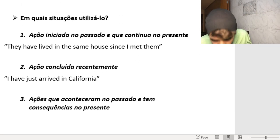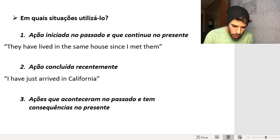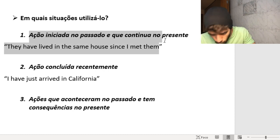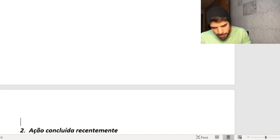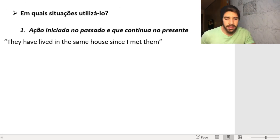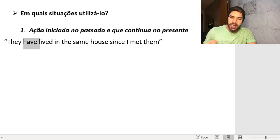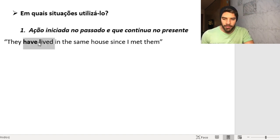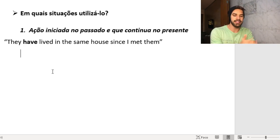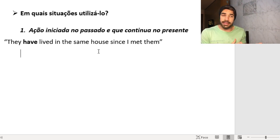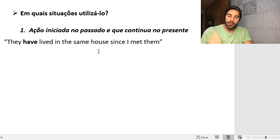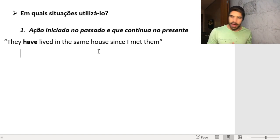So, when do we use the Present Perfect? The first situation: an action that started in the past and continues in the present. For example, 'They have lived in the same house since I met them.' The 'have' here is part of the structure — it doesn't mean 'to have,' it has no direct translation, but it will always be present. So they started living there in the past and they are still there — the action hasn't finished.